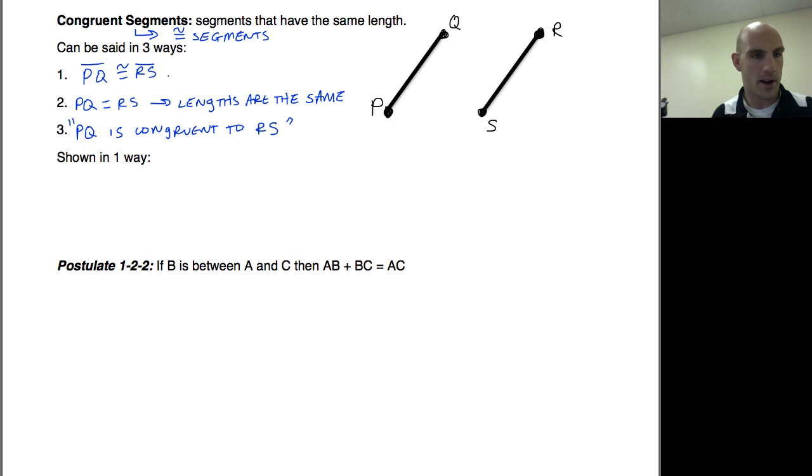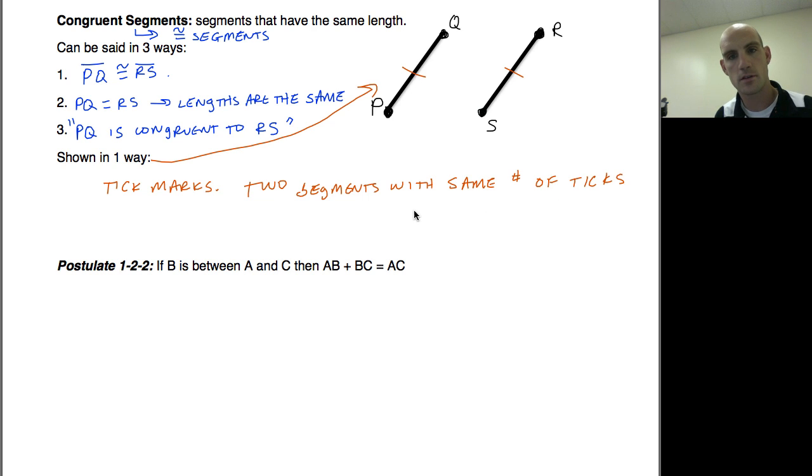We show it in one way, and this is the way: tick marks. Two segments with the same number of ticks are congruent. So whether I give them one tick mark or two tick marks, it's a matching game. So segments with two tick marks in the same problem would be congruent. Segments with three tick marks, et cetera, et cetera.